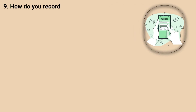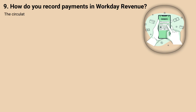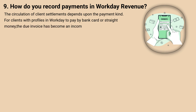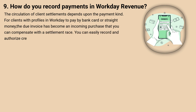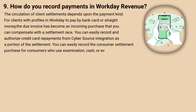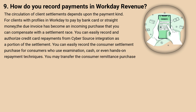9. How do you record payments in Workday Revenue? The flow of client settlements depends upon the payment kind. For clients with profiles in Workday who pay by bank card or direct money, the due invoice becomes an incoming purchase that you can process with a settlement. You can easily record and authorize credit card repayments from CyberSource Integration as a portion of the settlement. You can also record the consumer settlement for consumers who use check, cash, or manual repayment techniques. You may transfer the consumer remittance as part of the remittance entry or later.